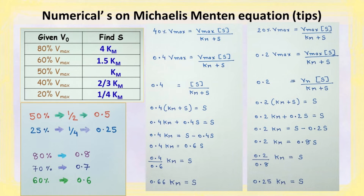For 20 percent of vmax, the value of substrate concentration works out to 0.25 km. This means if the substrate concentration is one-fourth of km, then the velocity will be 20 percent of vmax.